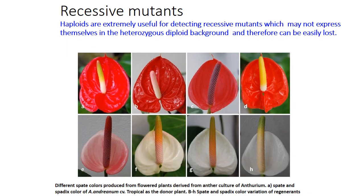Coming to recessive mutant identification. Haploids are extremely useful for detecting recessive mutants which may not express themselves in a heterozygous diploid background and therefore could easily be lost. Here linking this with quality protein maize production: the opaque-2 mutant is a recessive, and through haploid production the mutants are easily multiplied or double haploids are produced that can be base material to generate single crosses and improve quality protein maize lines.